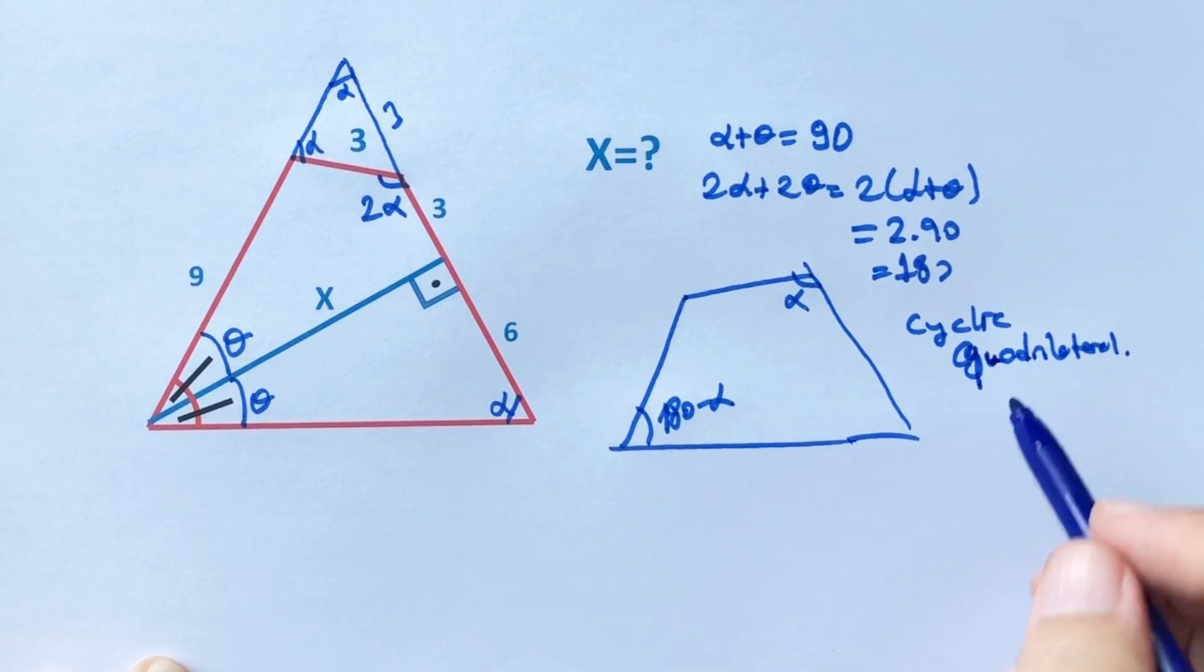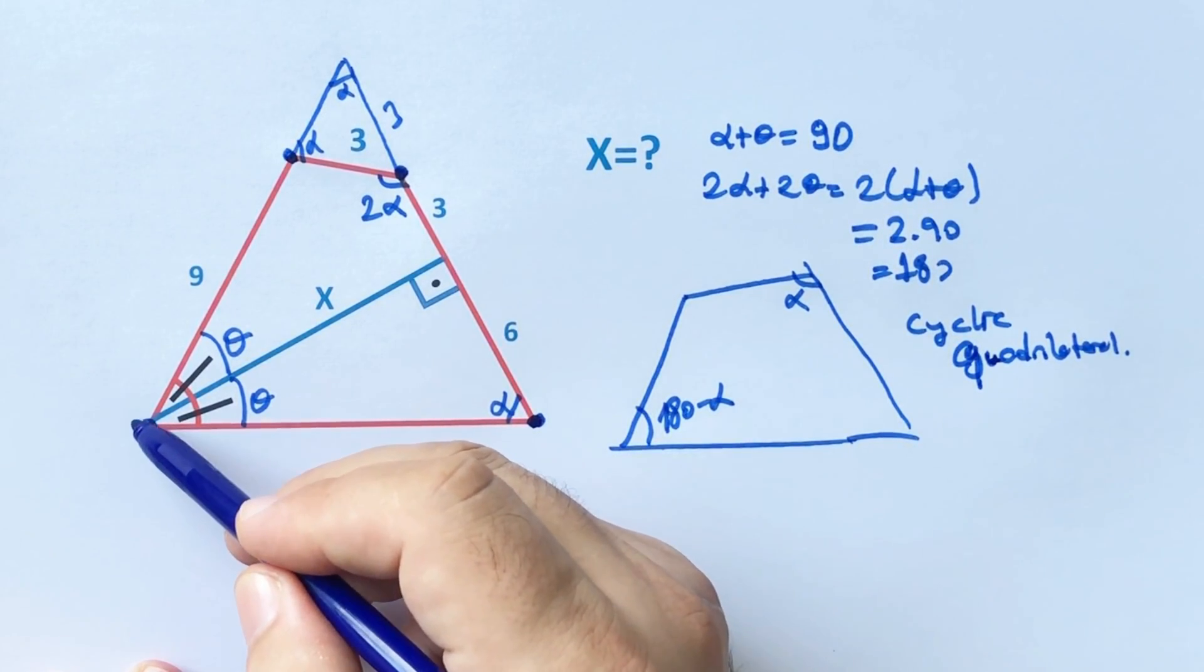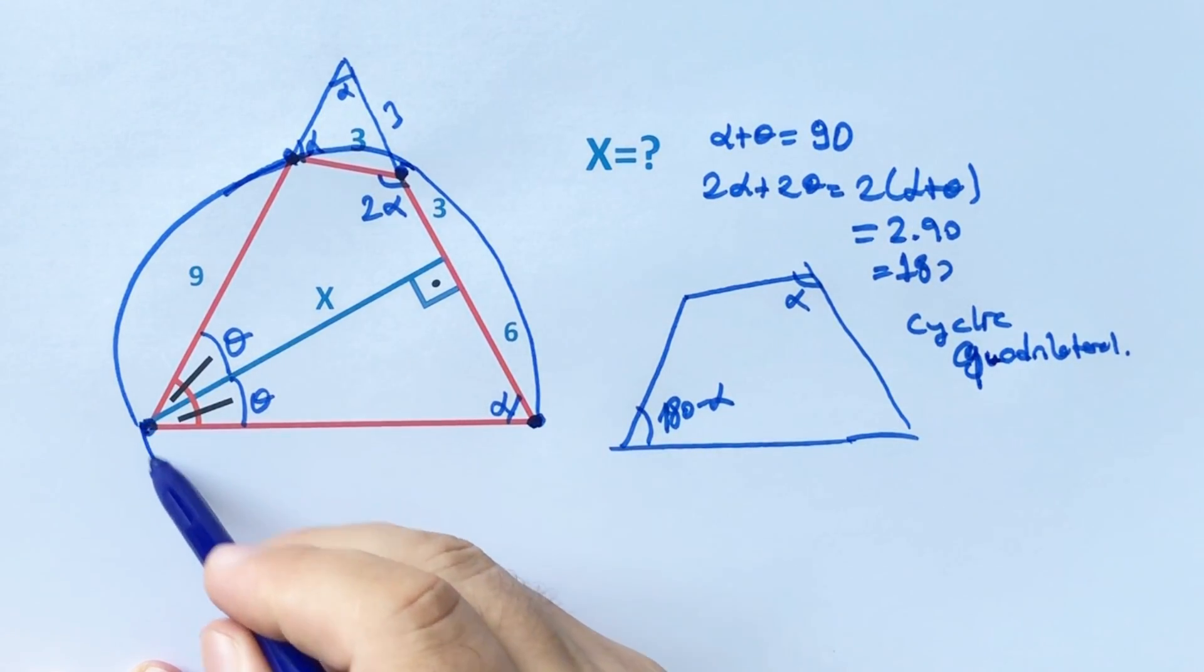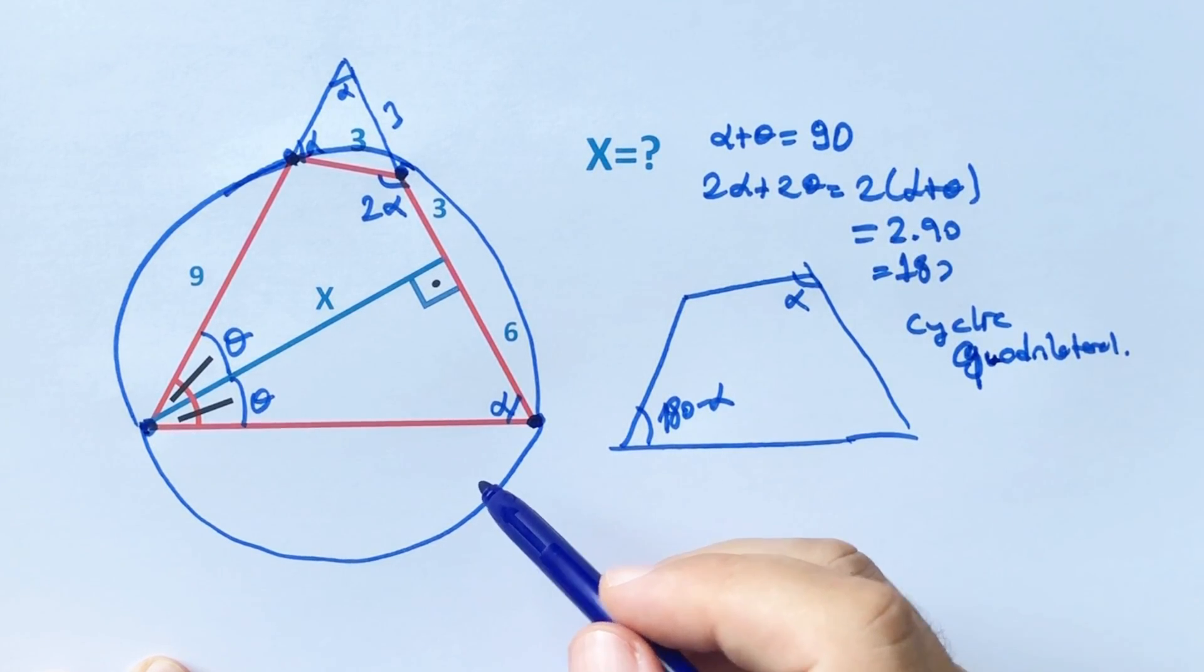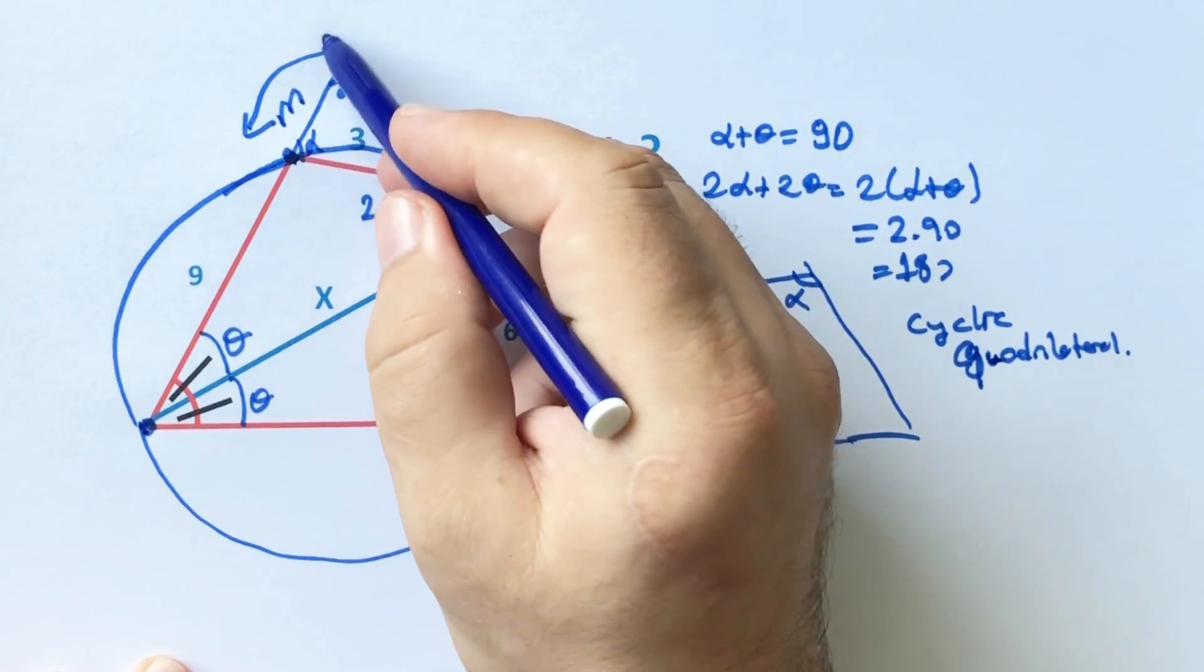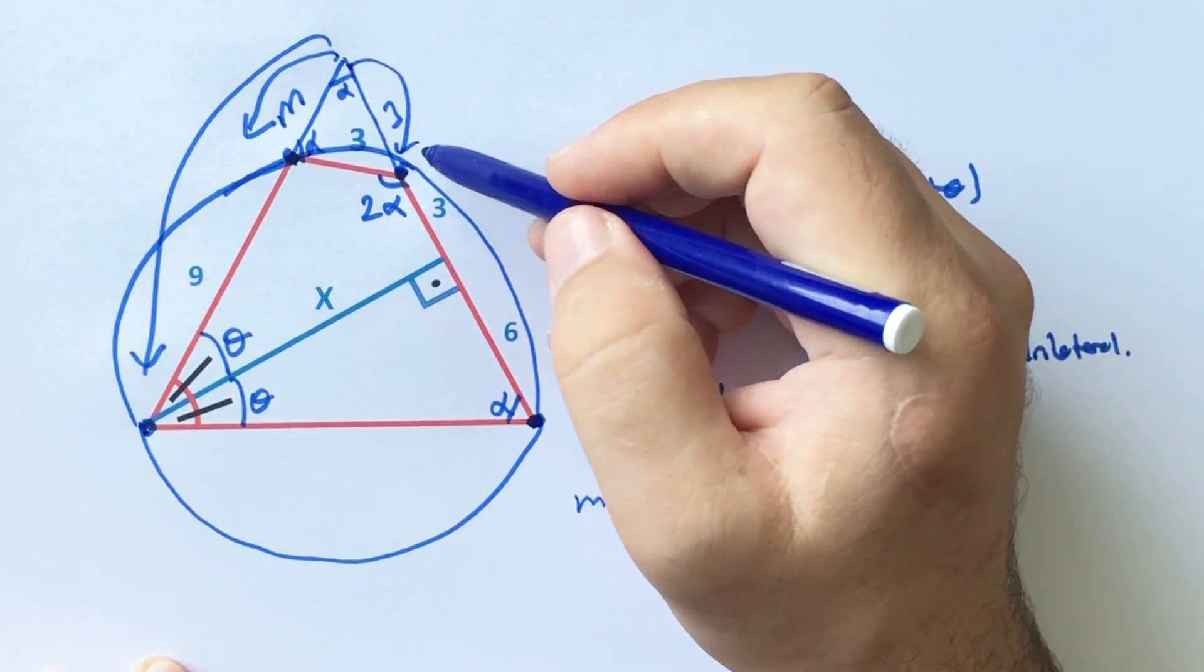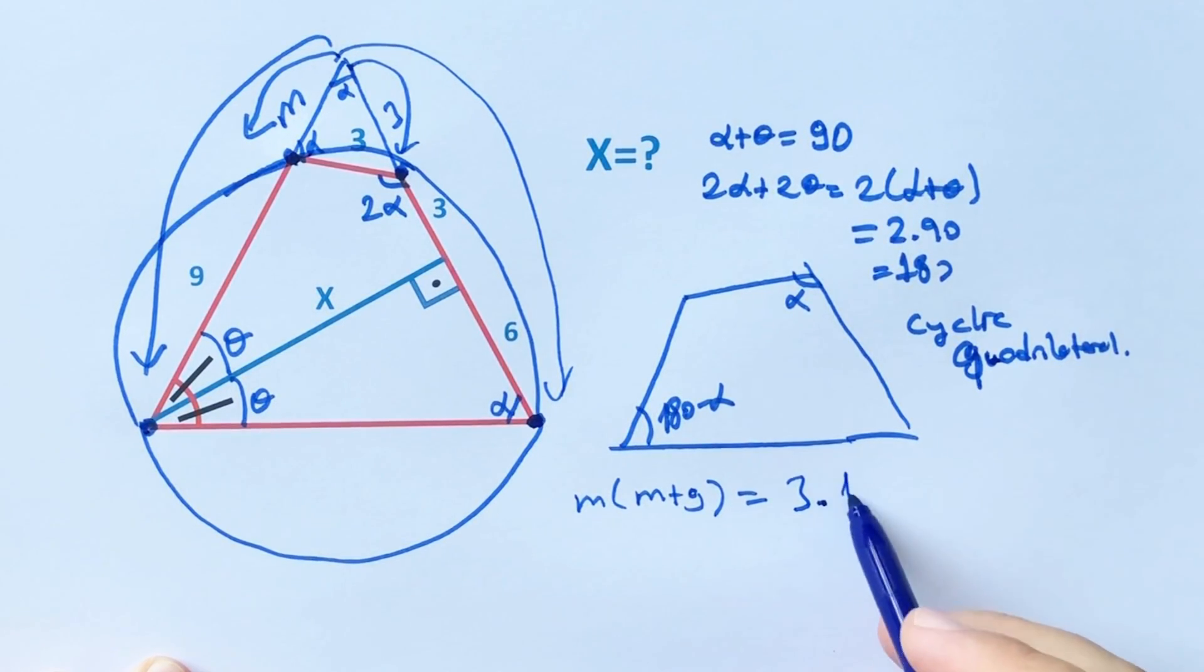Therefore, if we draw a circle, it passes through these four points. That means now we will apply secant theorem. So m times m plus 9 must equal 3 times the whole length, 12. M squared plus 9m equals 36. M squared plus 9m minus 36 equals zero. That means m equals 3 units.